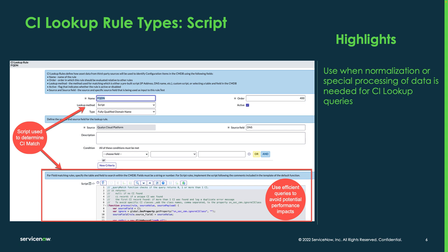The next type of rule is a script-based type, and this is used when you need some normalization of the data or any kind of special processing or lookups into other tables. It gives you the ability to provide advanced logic to find a match. This is typically the type of rule that's used the most. One caveat: if you're going to build any kind of logic in here, you want to make sure that your queries are as efficient as possible so that you're not creating any performance degradation during an ingestion.